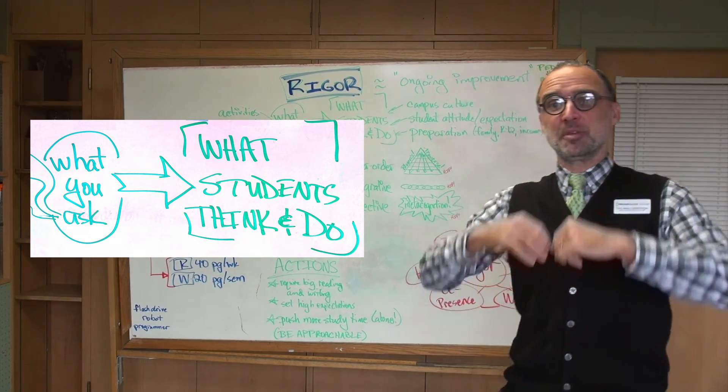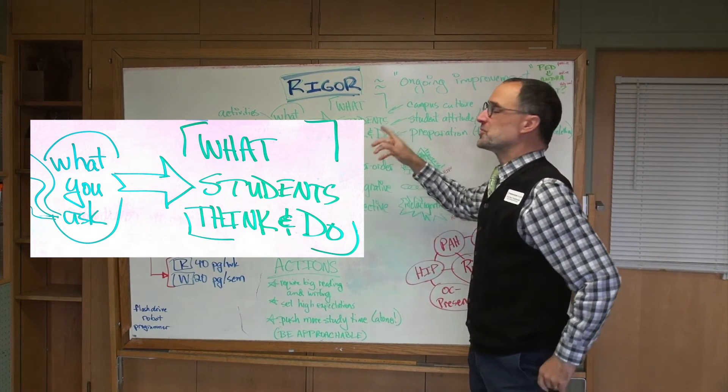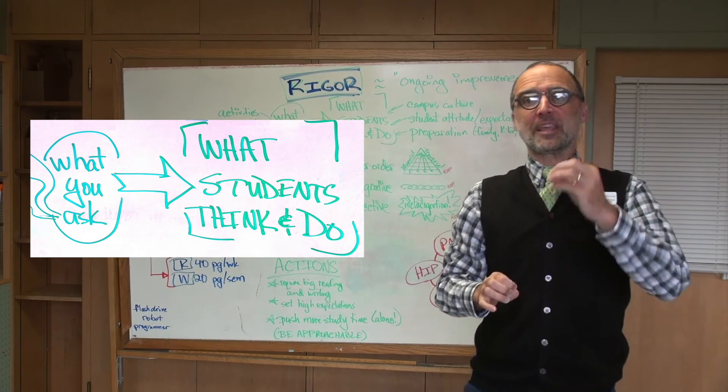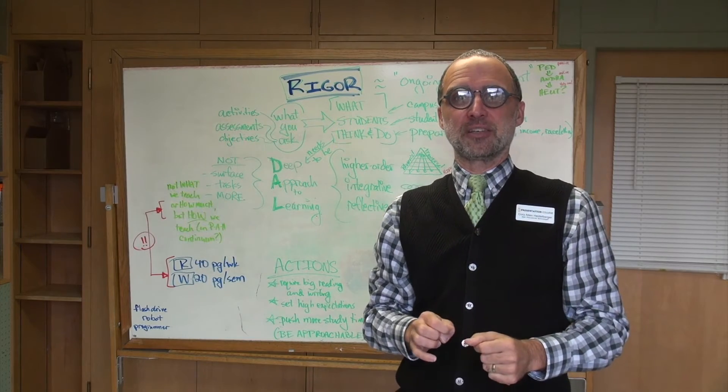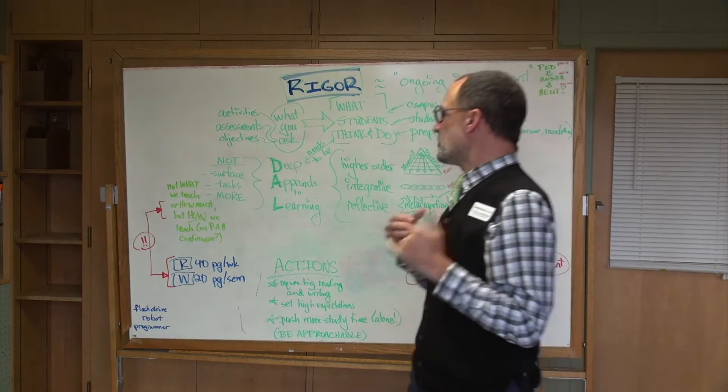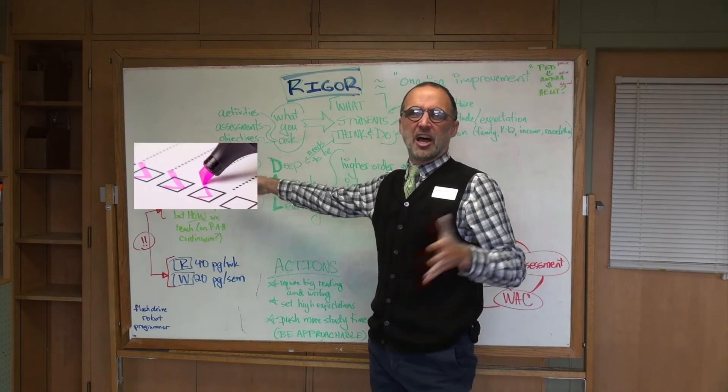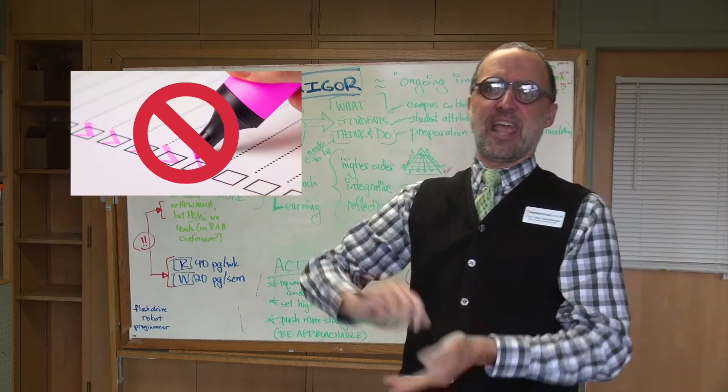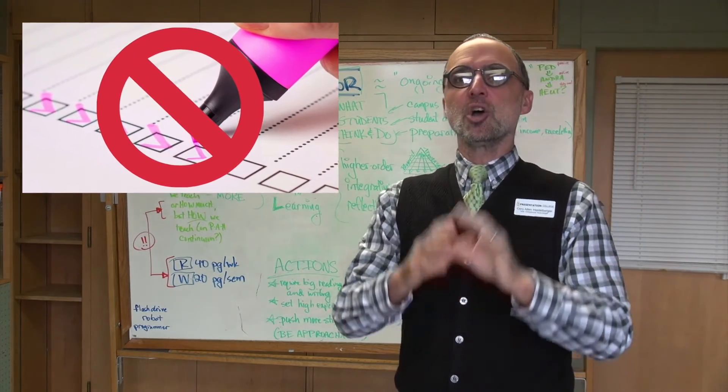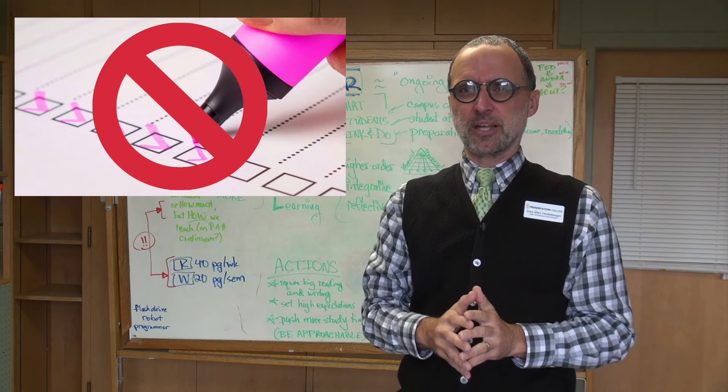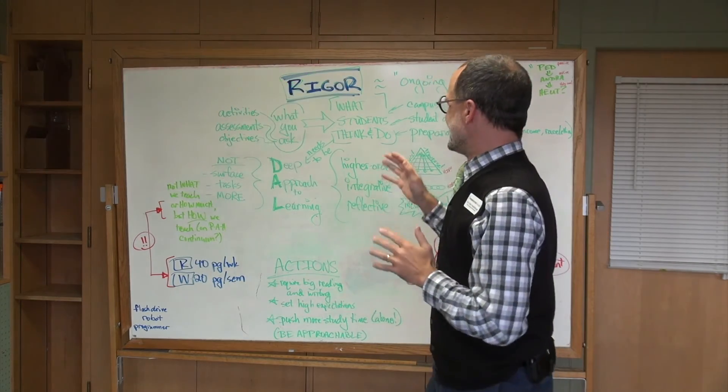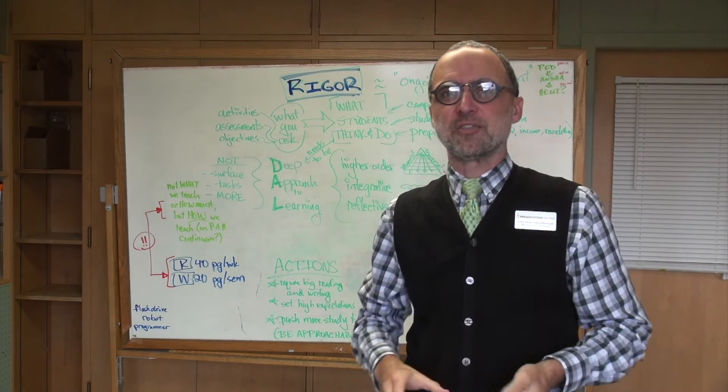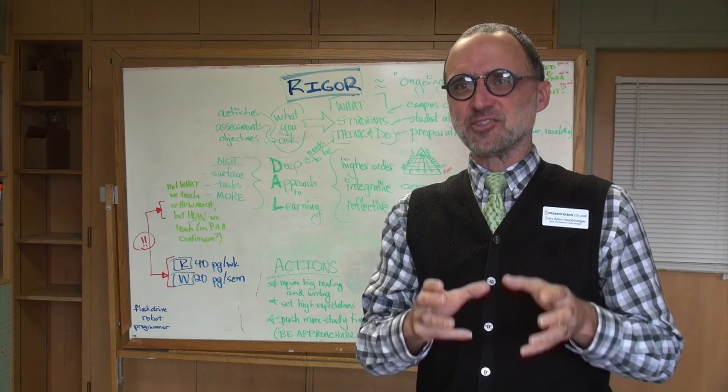But ultimately, it's going to be shown, it's going to be proven, by what the students themselves think and do. Achieving rigor is about getting students to do more difficult things. It's about getting students to move away from thinking that school can be handled as just a checklist. Get away from a surface approach that just says, I'm just here to do these tasks and hand it in and be done and fire and forget. We want to get students away from that surface approach to learning to a deep approach to learning, where they start asking those questions. They become more active and they become self-motivated as learners.